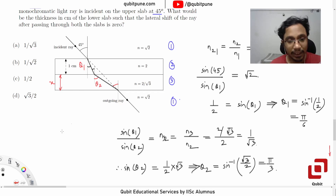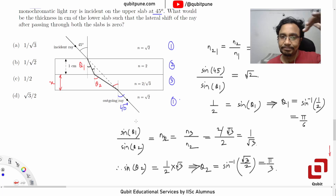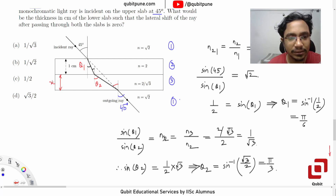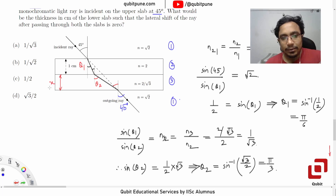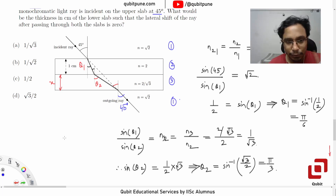θ₂ is now 60 degrees. And then the final angle is again 45 because of no net deflection. Using these angles that we have found, we would like to find the thickness of the lower slab, which we have called x.